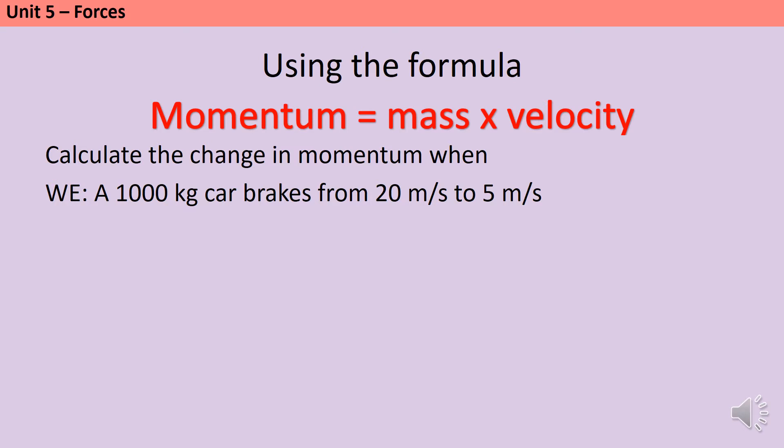Now, there are two ways you can do this, which will both get you the same right answer. So, in this worked example, we have a 1,000 kilogram car, and it's moving at 20 meters per second, but then it brakes until its velocity is only 5 meters per second.